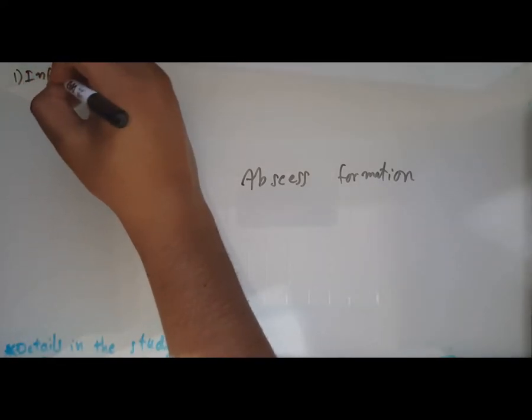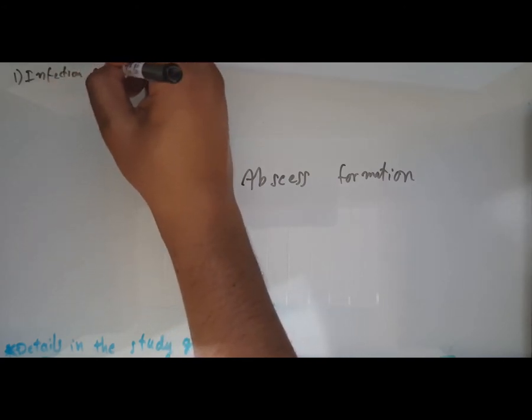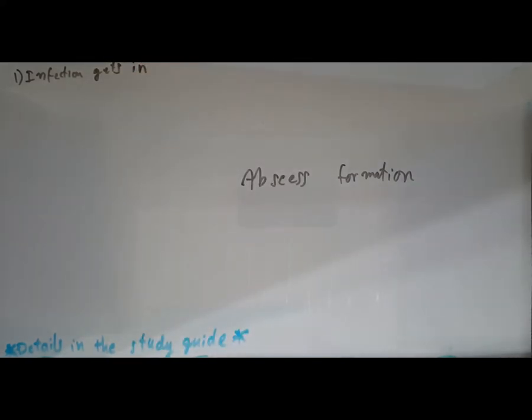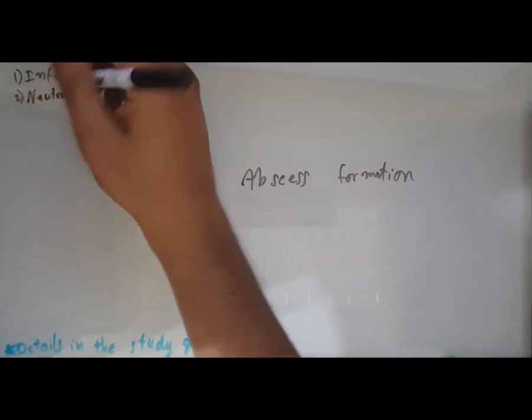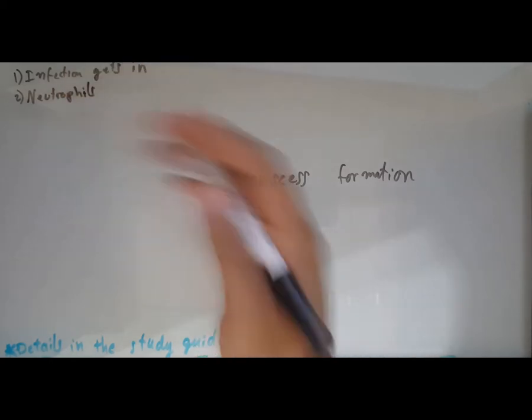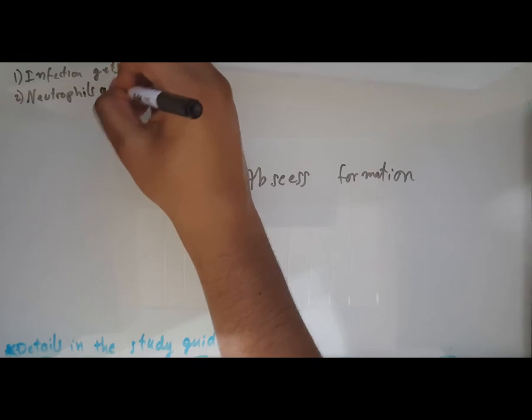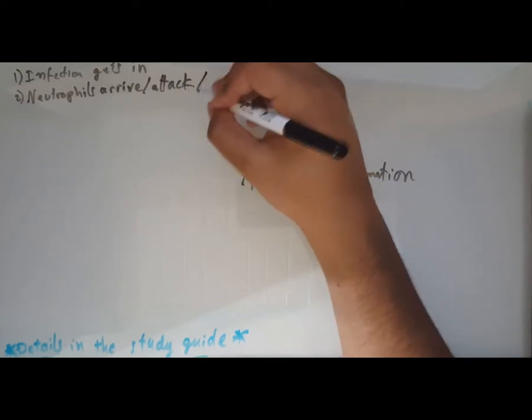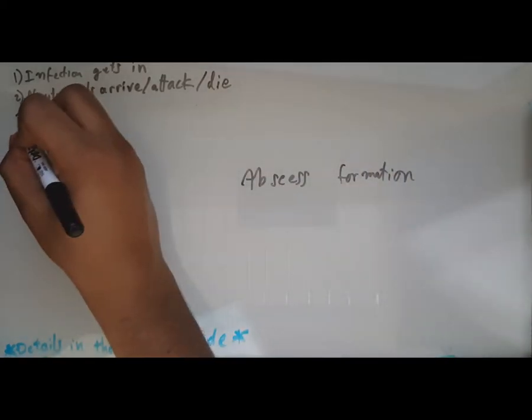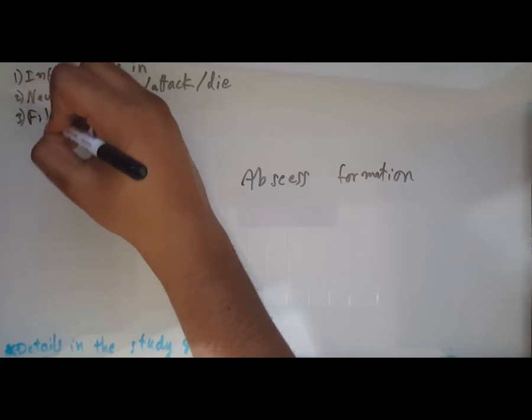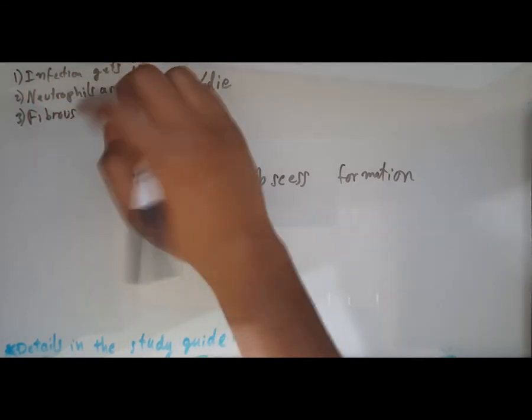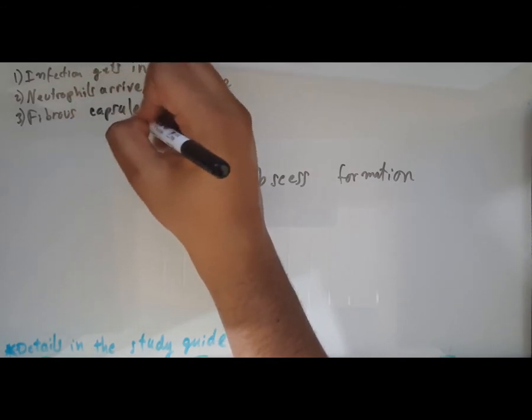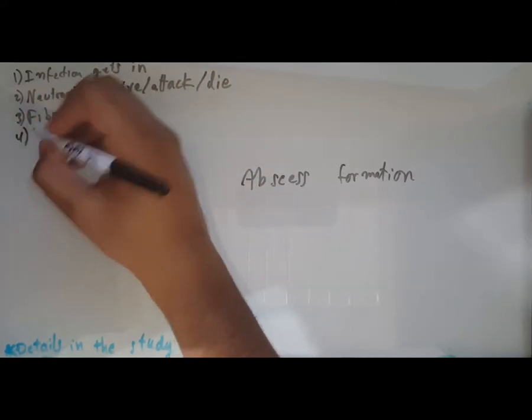These steps are: first, the infection has to get into whatever part of the body it's going to. Second, neutrophils will arrive at the scene, attack the invader, and then die. Third, a fibrous capsule will form. And the final step is the abscess grows as the pathogen lives.